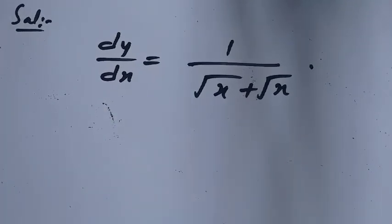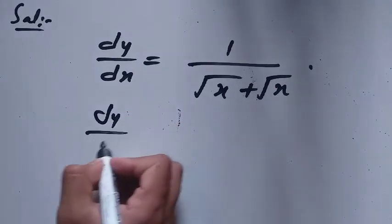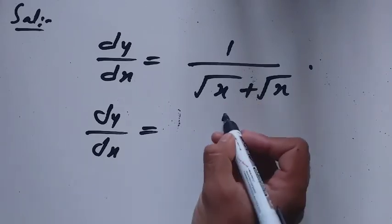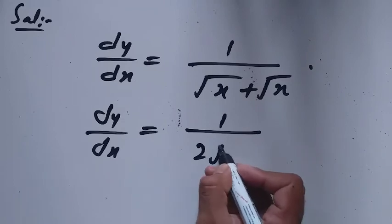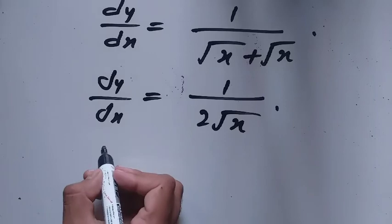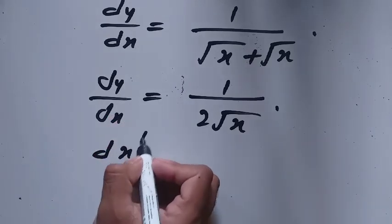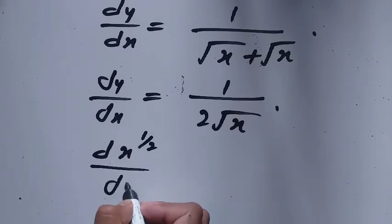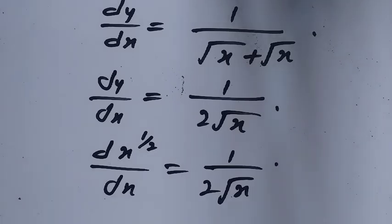That is dy divided by dx equals 1 divided by under root x plus under root x, which is 1 divided by 2 under root x. We can also write this as: the derivative of under root x, which is x to the power one-half, equals 1 over 2 under root x. This is our answer by the ab-initio method.